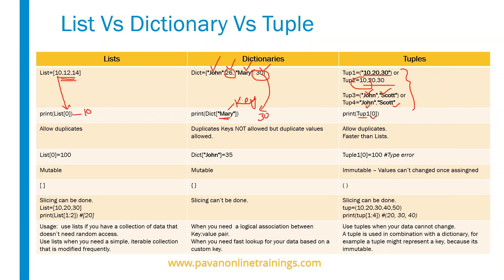In the list, we can store duplicate values — list allows duplicate values. In dictionaries, keys are not allowed to be duplicates, but values can be duplicated. So a dictionary cannot have duplicate keys because keys are always unique, but values can be duplicated. When it comes to tuples, tuples also allow duplicates just like a list. Also, tuples are slightly faster than lists.